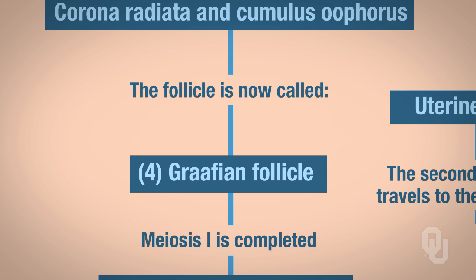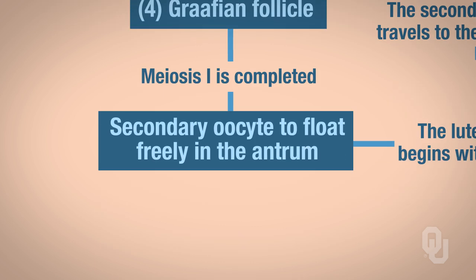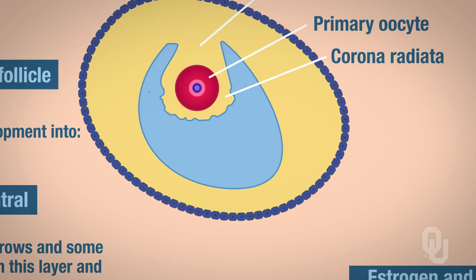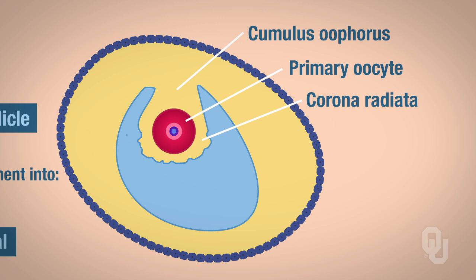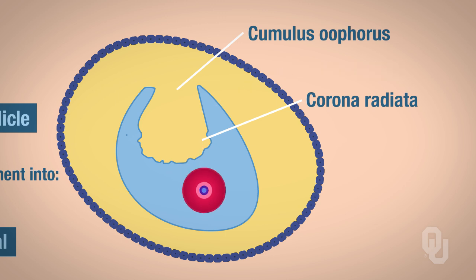Remember from the slide on oogenesis: when meiosis I is completed, you are left with a secondary oocyte. So we're no longer dealing with a primary oocyte — now we're dealing with the secondary oocyte. The secondary oocyte is going to be floating freely in the antrum. You can see from this diagram where the primary oocyte was; it moves into the antrum and is now a secondary oocyte floating freely.